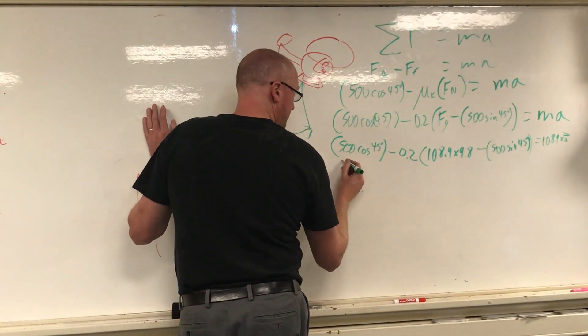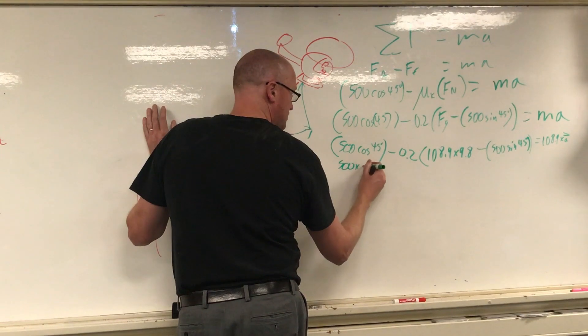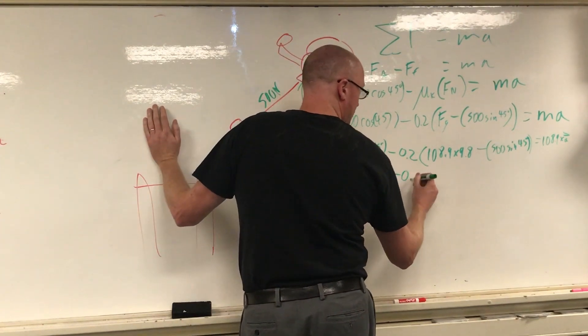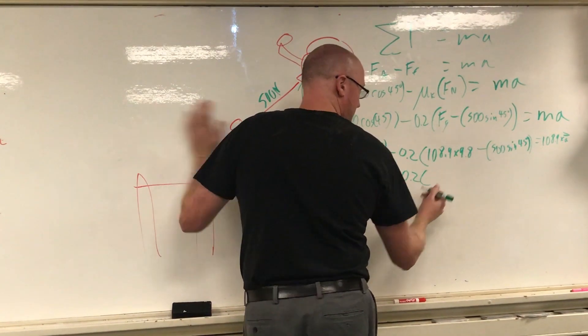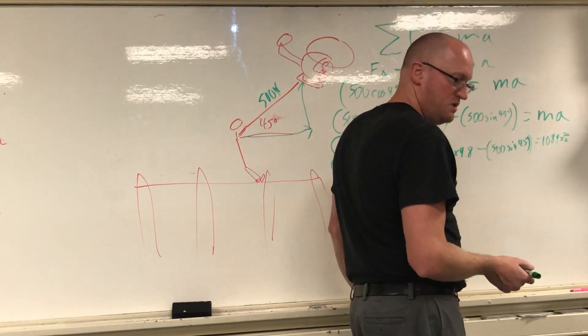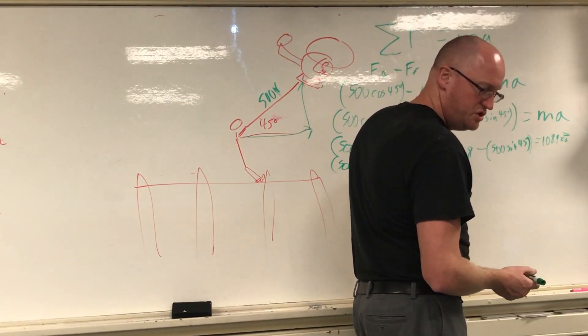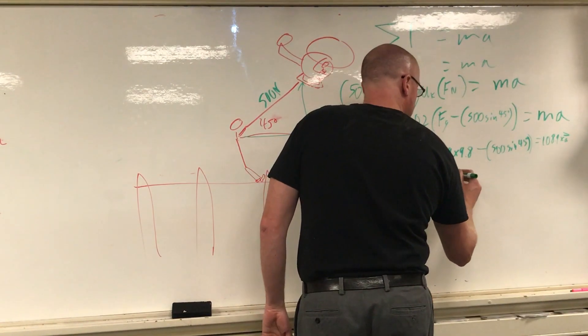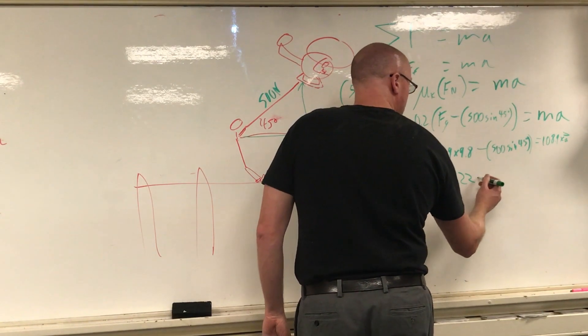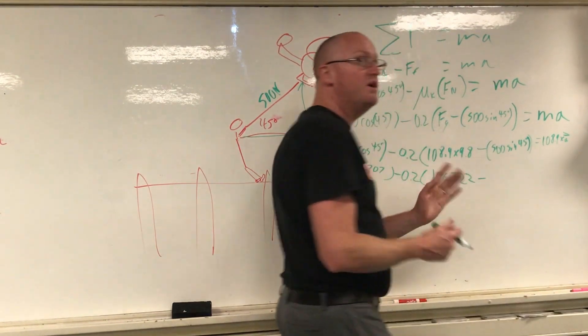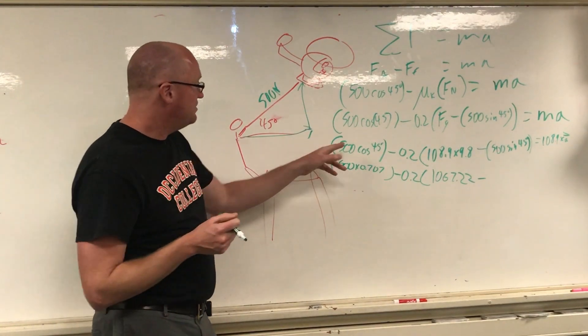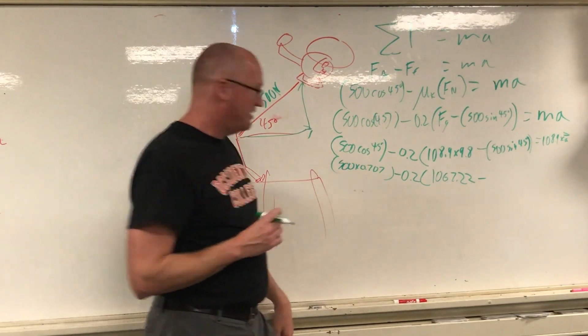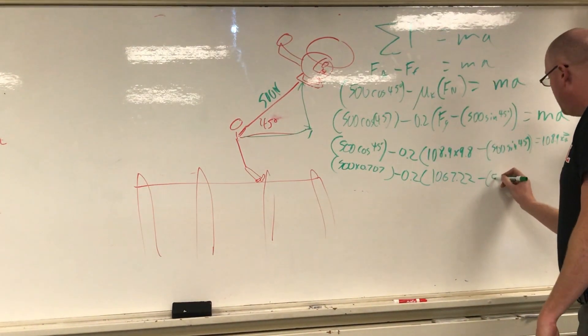That's the force of gravity minus 500 sine 45 degrees. And that equals my mass, 108.9 times acceleration. That's the whole thing we're trying to find out here. So cosine is 45, that'd be 500 times 0.707 minus 0.2 times this multiplied together. I think I got 1067.22.